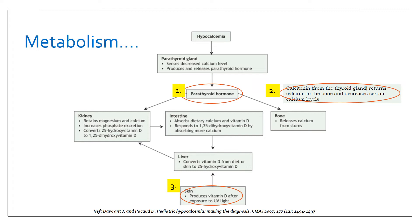Bone is the major storehouse of calcium. Kidneys retain magnesium and calcium and increase phosphate excretion. They convert 25-hydroxy D to 1,25-dihydroxy D.